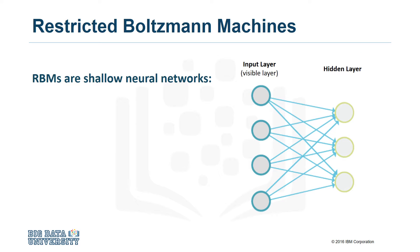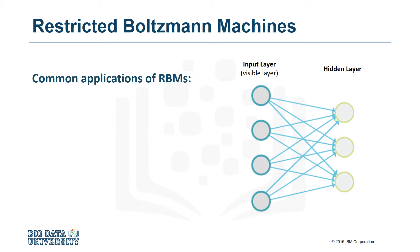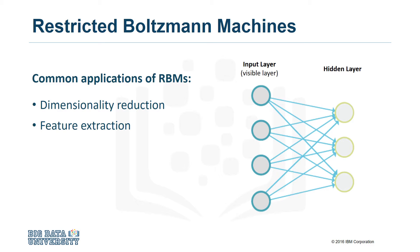RBMs, or restricted Boltzmann machines, are shallow neural networks that only have two layers. They are used to find patterns in data by reconstructing the input. We say that they are restricted because neurons within the same layer are not connected. RBMs were first created by Paul Smolenski in 1986, and they were further developed by Jeffrey Hinton in 2002. RBMs are useful in many applications like dimensionality reduction, feature extraction, and collaborative filtering, just to name a few.